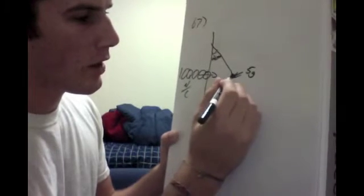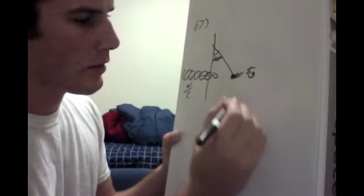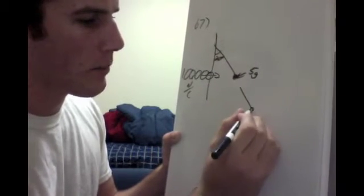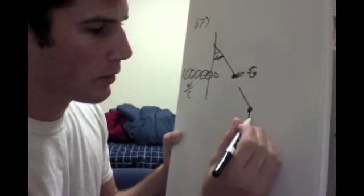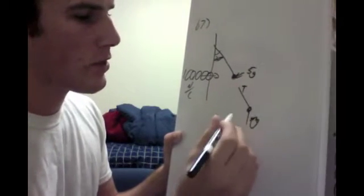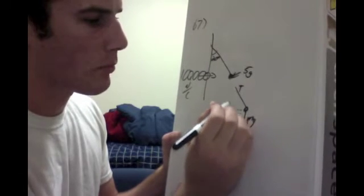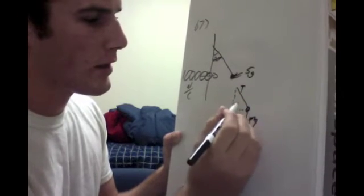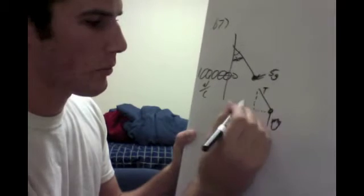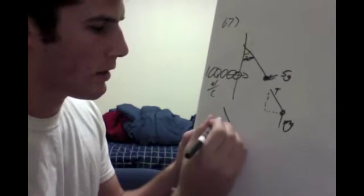So to start off, we're going to look at the mass, the free body diagram, and we're going to have mg and tension on that. We can break the tension into components, and we're going to look at that right here.